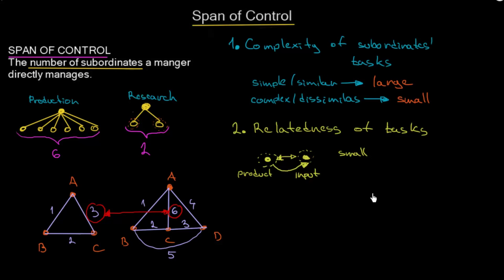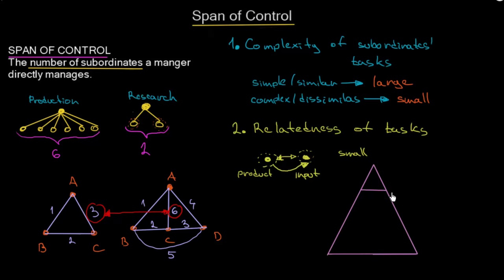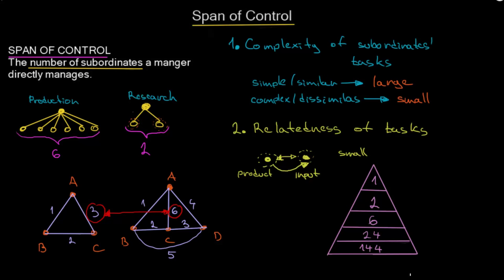Now, why is this useful? Quite often you will see organizations drawn as a pyramid, and the span of control is exactly what tells us why organizations are drawn this way. Let's make a few hierarchical levels. On the top there is just one CEO, then we have two divisional managers, then six regional managers, then 24 functional managers, and finally 144 members of the workforce.